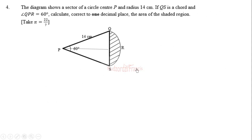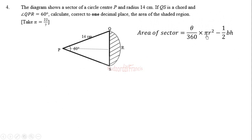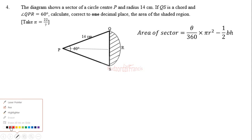If you don't want to use the formula half r squared sine theta, you can also use: area equals theta over 360 times pi r squared, minus half base times height. In this case the altitude creates a right angle triangle.